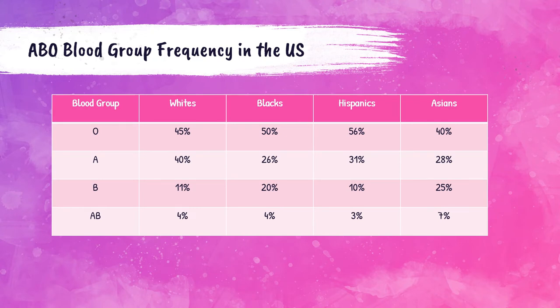This chart shows the frequencies of ABO blood groups in the United States. Blood group O is the most common blood type, followed by group A, then group B, and then group AB. Blood bankers should know the different frequencies of the blood groups in each ethnic group as listed in this chart, and most specifically within the white and Black populations for the purpose of this lecture.